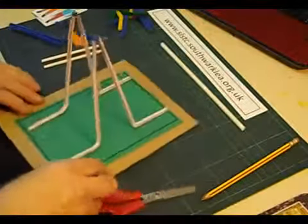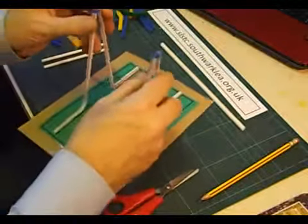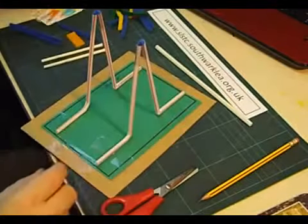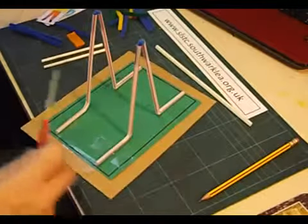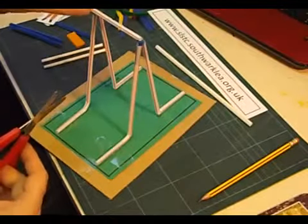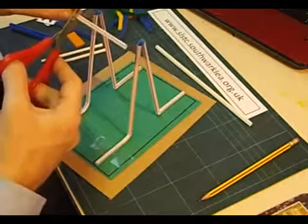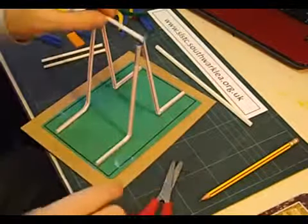We now need to add a piece to go across the top to stop them waggling that way. So we need another piece of bendy straw. We're not going to use the bendy part. We need to cut a piece about that big. That looks about right.